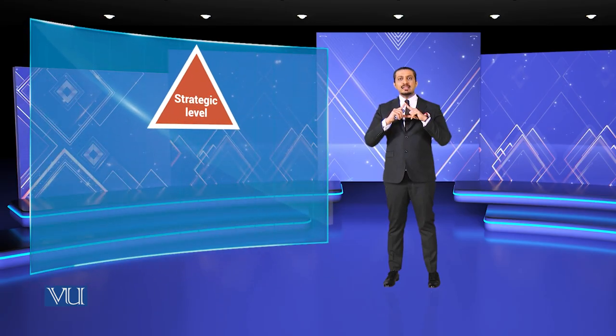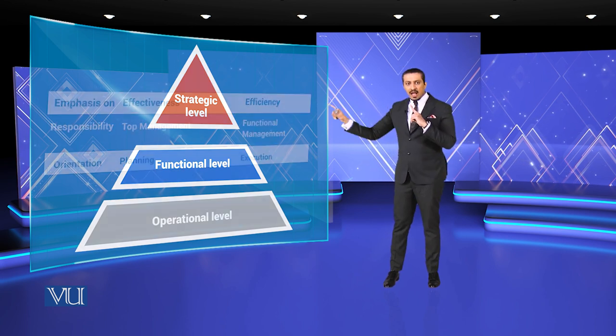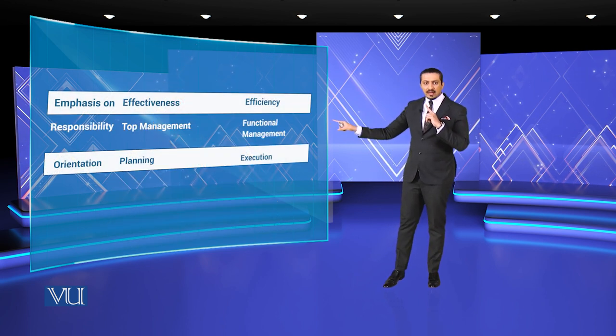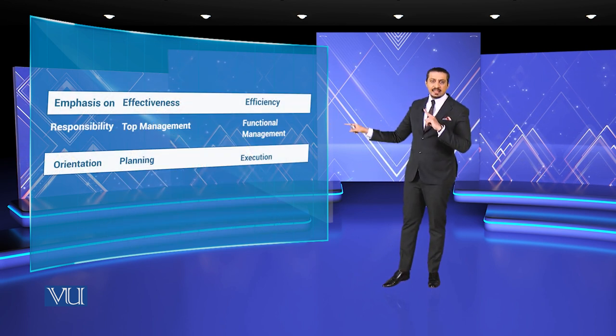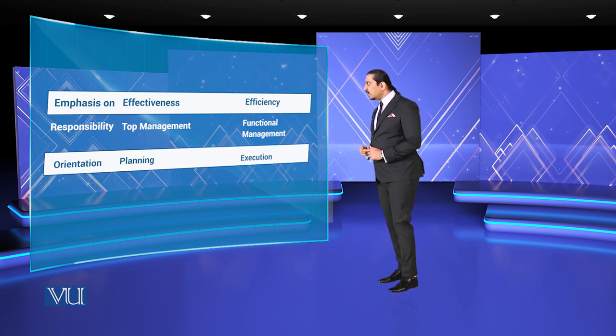Responsibility lies with top management, which then flows into implementation at the functional level. Remember the paradigm: first is the strategic level, then the functional level, and third is the operational level. So you can see how it flows from top management down to functional management.